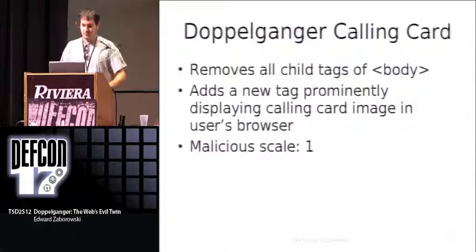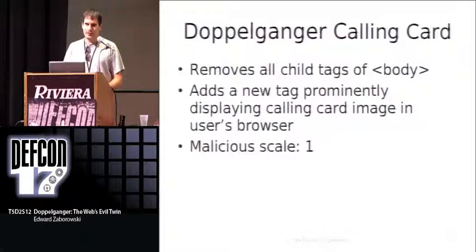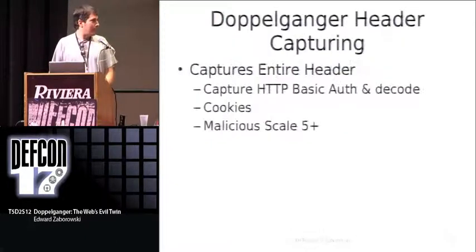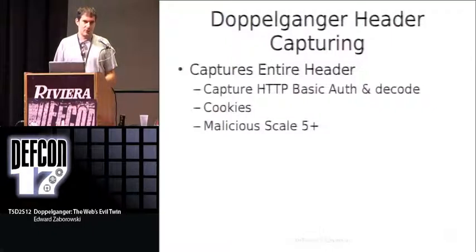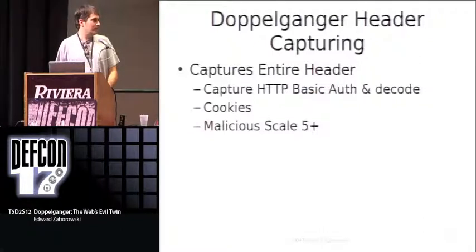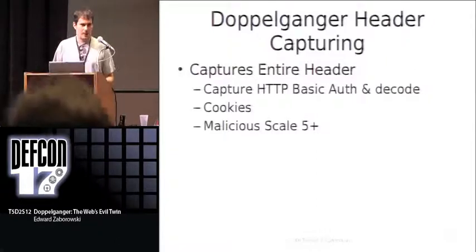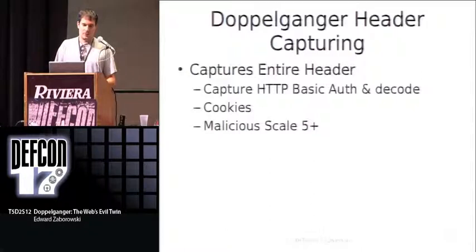Inserting a calling card simply removes all the children tags of the body tag and adds a new image to display on the page prominently. Header capturing works just as it sounds — as a header is coming in or out, you can grab it. This works for HTTP basic authentication and can decode it on the fly, so you don't need to put it through a base64 decoder separately. You can also grab cookies to steal other people's sessions.